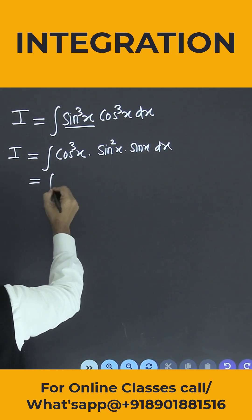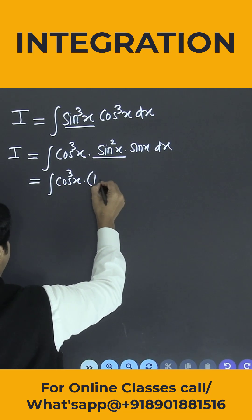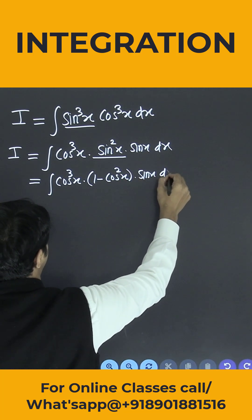So this is equal to integration cos cube x into, what is sin square x? Can I write like this? 1 minus cos square x into, this is sin x into dx.